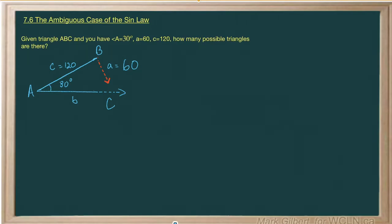Given triangle ABC and you have angle A equal to 30, side a equal to 60, and side c equal to 120, how many possible triangles are there?